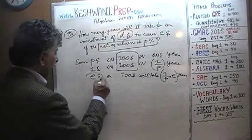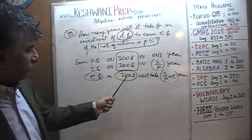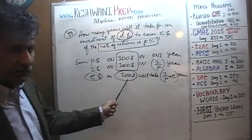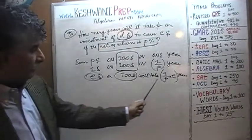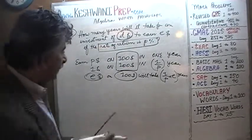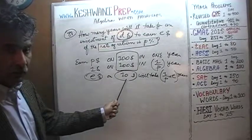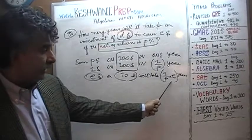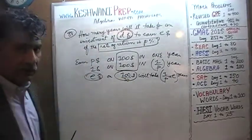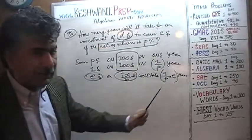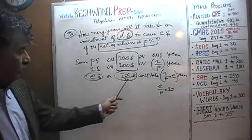That takes care of the E dollars. Now we move to the investment amount. We are not investing $100 — we are investing D dollars. To transition from $100 to D dollars, we first go to $1. If it takes $100 to earn E dollars in E/P years, investing only $10 — one-tenth of the amount — should take 10 times as long: 10 times E over P years.